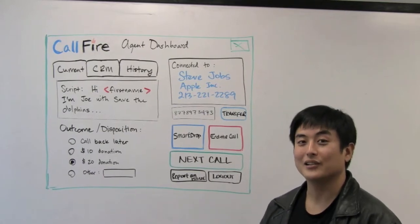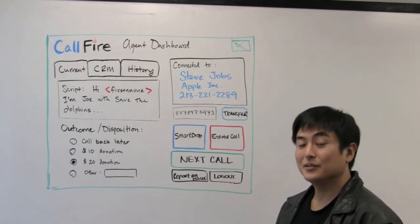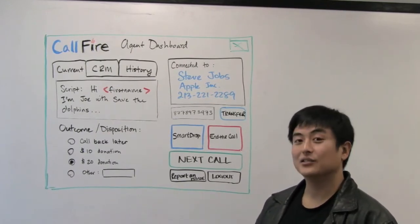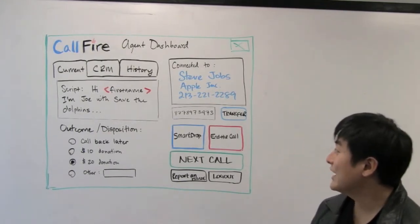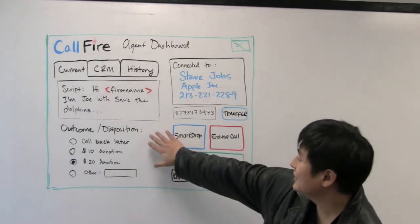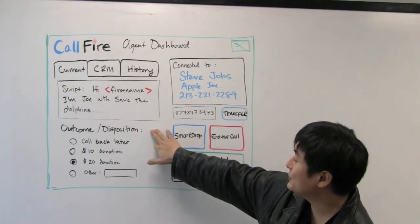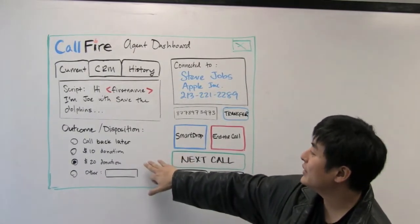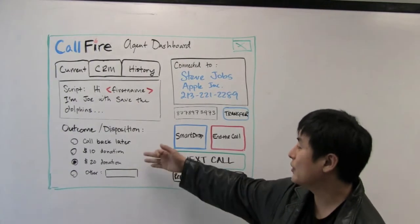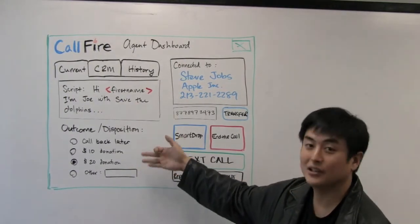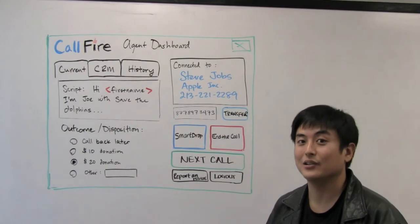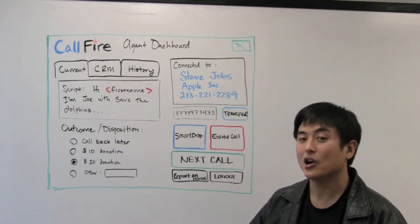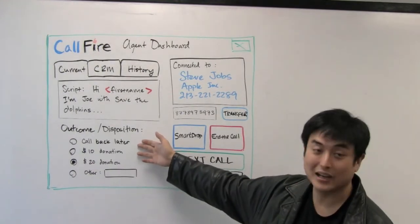Another feature in Callfire is the ability to have disposition questions pop up on the agent screen when they get connected to a call. You can have an outcome or disposition question which prompts the agent with a series of multiple choice answers they can choose from. When they're on the call, they can choose a disposition, and you can use this information to later filter out numbers you don't want or run a subset campaign — for example, calling back people who say call back later.